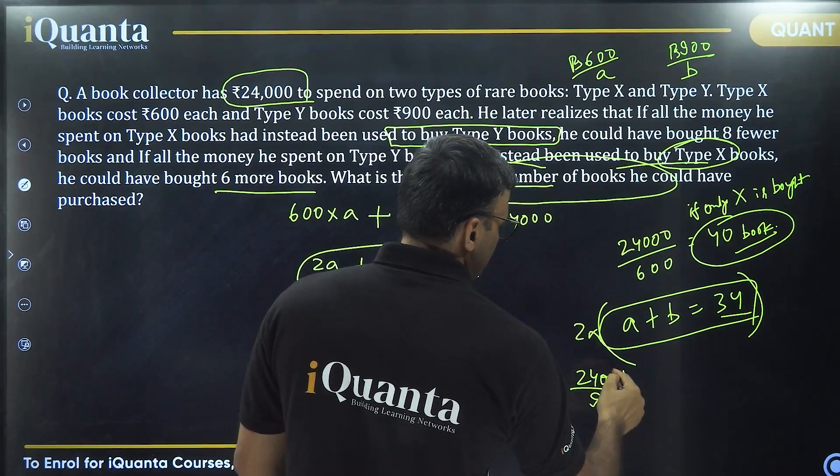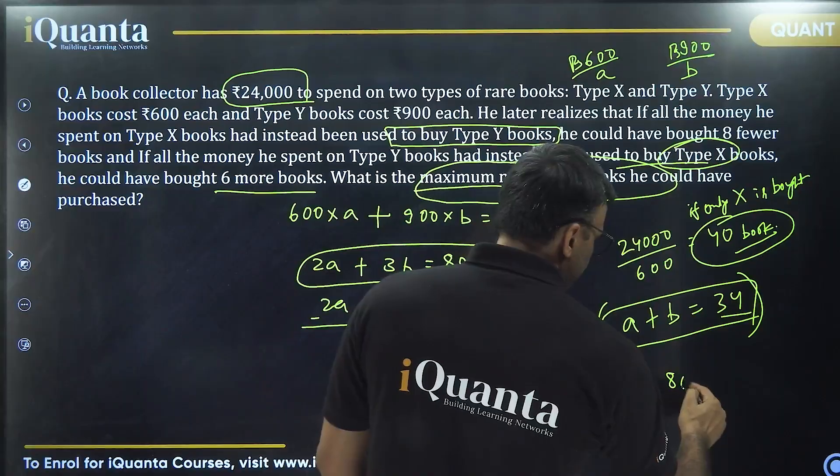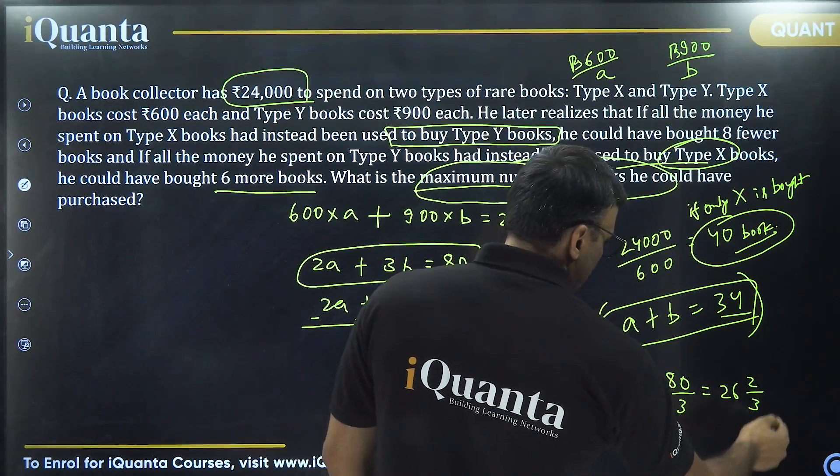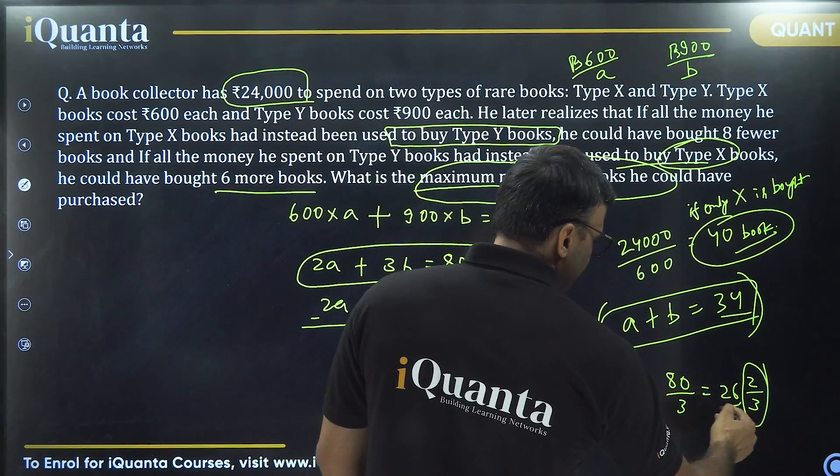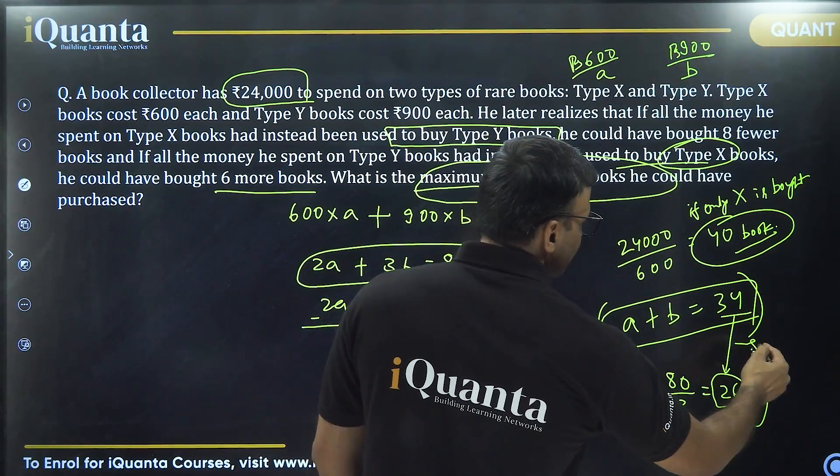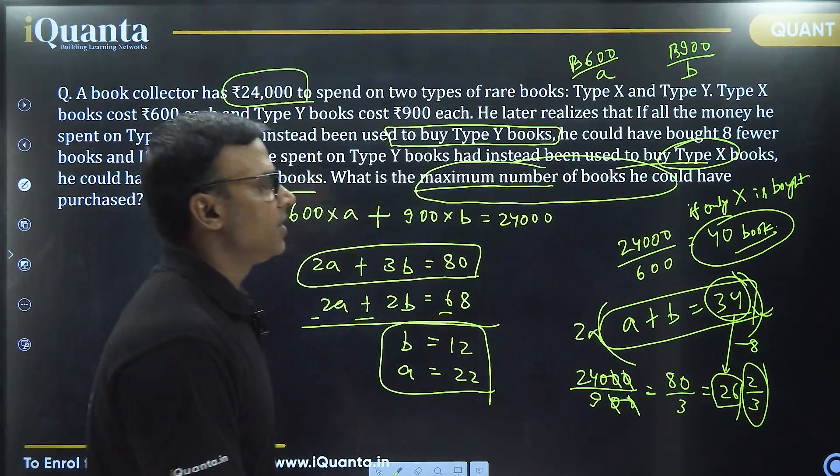Cancel zeros, and that gives us 240 by 9, that is 80 by 3. Look at it closely, it is 26 and 2/3. Now 2/3 is meaningless, so the number of books he's buying is 26. Is it 8 less than 34? Yes. So this information is correct, and the number of books that he's buying is 34.